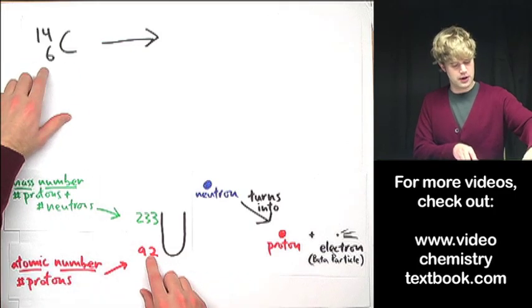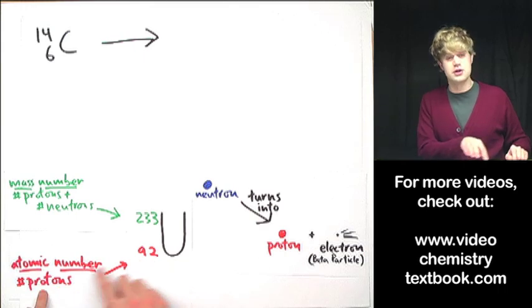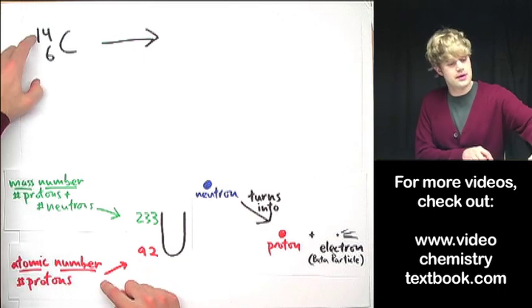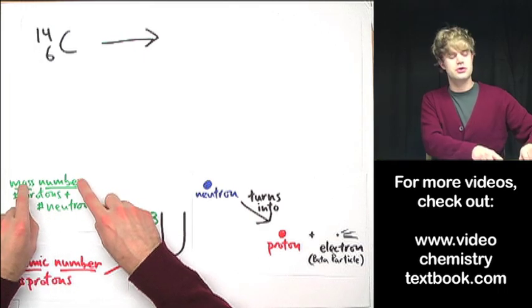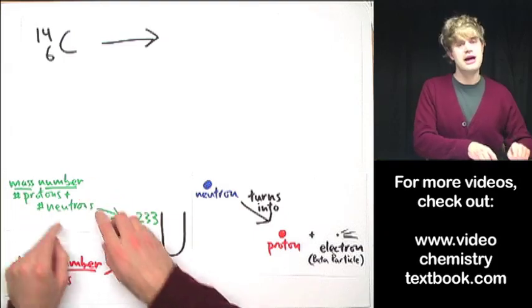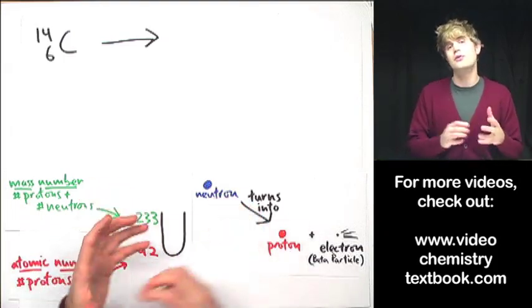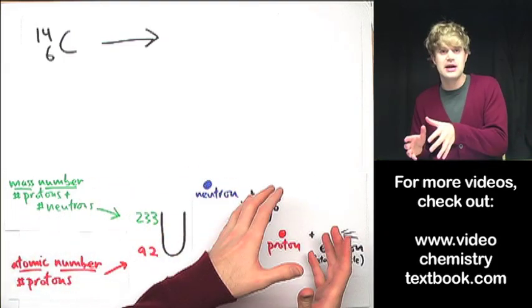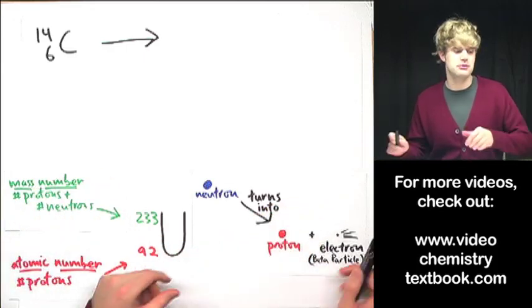And then there are two numbers to the side. There's a lower number here that represents the atomic number, which is the number of protons. The number up here is the mass number, which is the number of protons and neutrons. We need to know both of these to figure out what we get after a radioactive decay event happens.